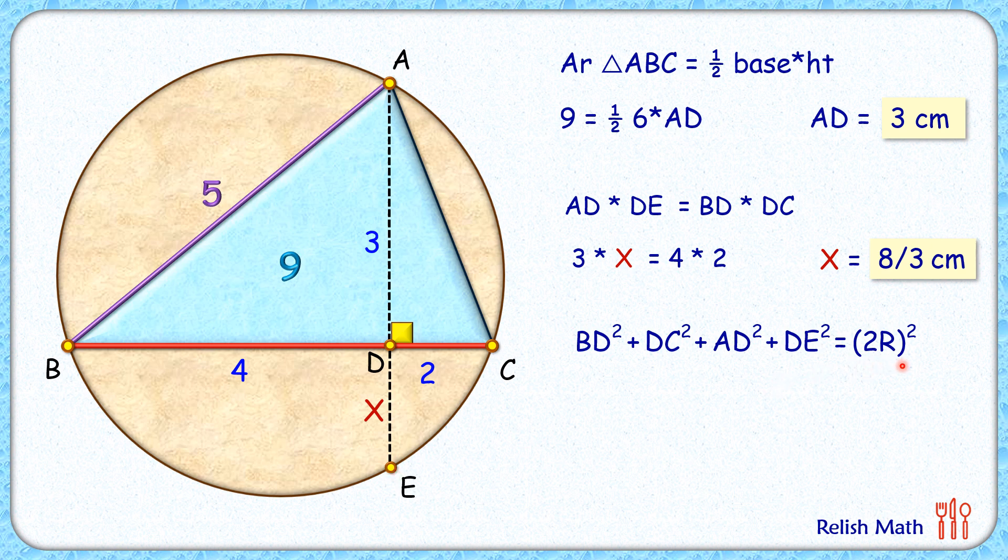Here, putting the values, we get 4² + 2² + 3² + (8/3)² = (2r)². Now solving it, 2r² is 4r², so 4r² = 325/9.